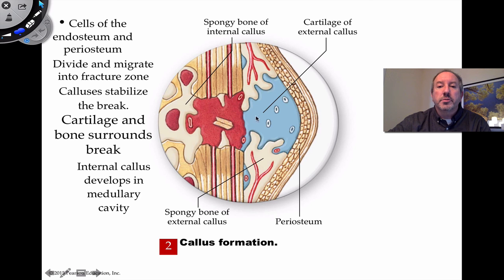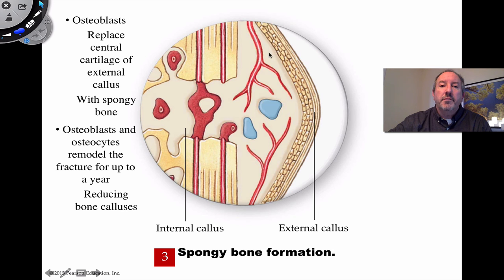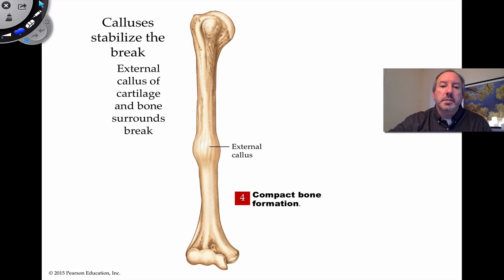Then the cells of the endosteum and periosteum will start to migrate into the fractured zone and start to produce calluses. These calluses are internal, and at first cartilage is put down. Chondrocytes, which are the cells of cartilage, will start to form this callus internally, and even inside the medullary cavity calluses will start to form. The cartilage and bone start to surround the break. Ultimately, the cells become more active, replacing the cartilage material with first spongy bone, which then becomes mineralized and hardens. On the outside of the bone, there may be a bulge — an external callus — and the callus strengthens and stabilizes the break.